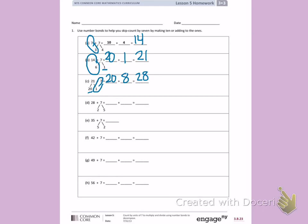Letter D. 7 has been decomposed into 2 and 5. 28 and 2 make 30, so I can add 30 plus 5, which is 35.